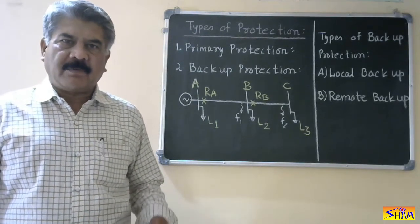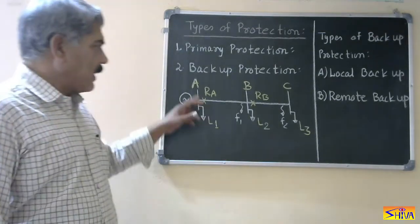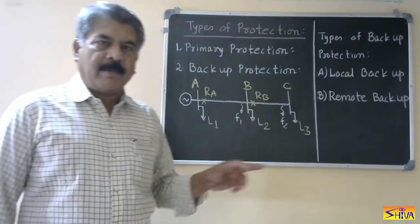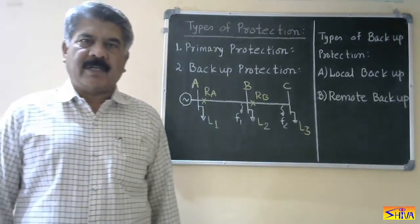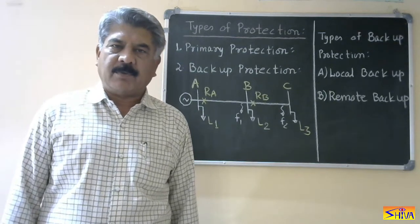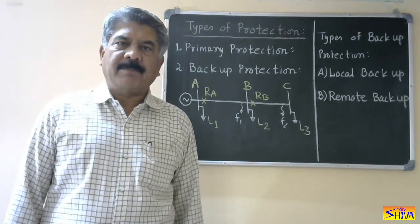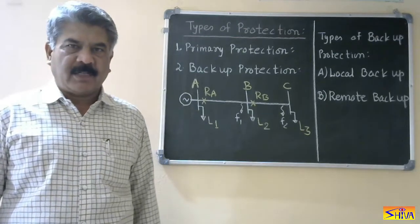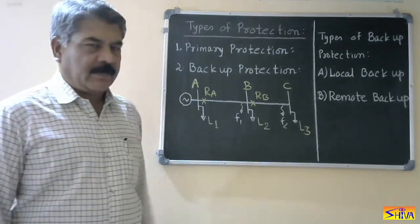Therefore we require a second line of protection — that is called backup protection. Backup protection is nothing but the second line of protection, and it operates when primary protection fails to operate or when primary protection is taken out for maintenance purposes.